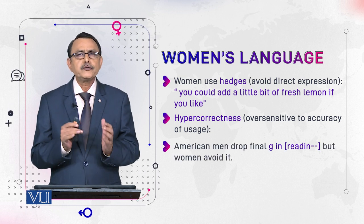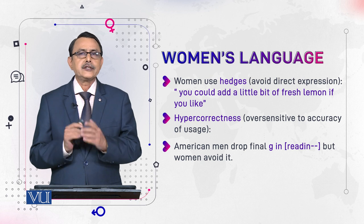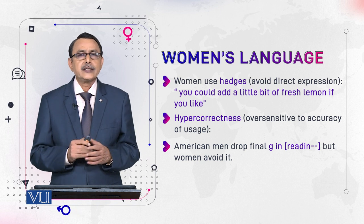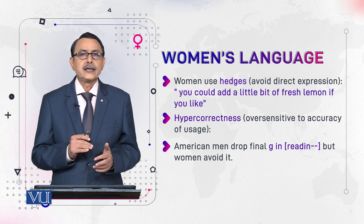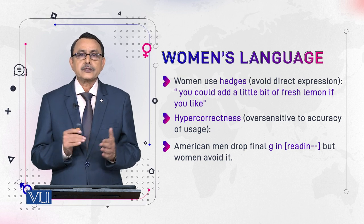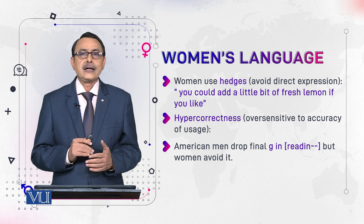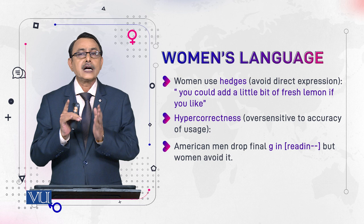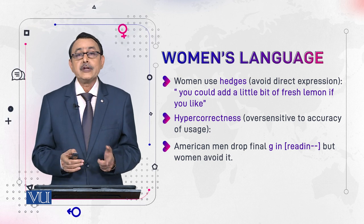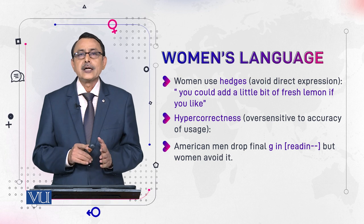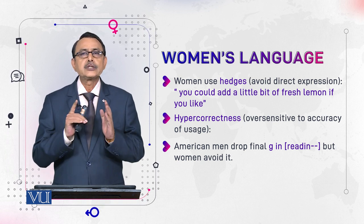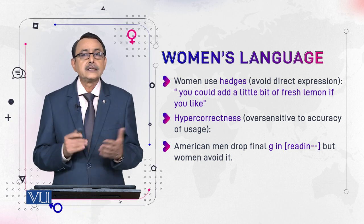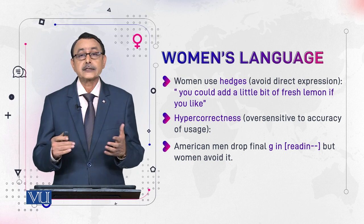Similarly, women are over-sensitive in matters of accuracy — this is called hyper-correctness. For example, Americans often drop the '-ing' ending from words like 'reading,' 'writing,' and 'playing,' pronouncing them without the final 'g' sound. But when women use such words ending in '-ing,' they pronounce the full 'g' sound, unlike men who drop it. So women are hyper-correct and sensitive to accuracy.